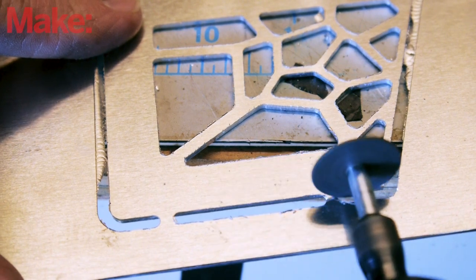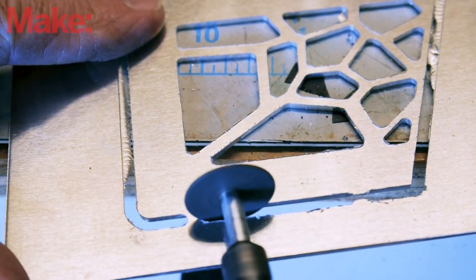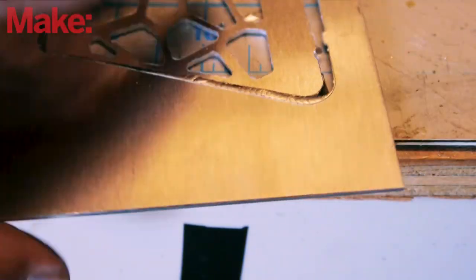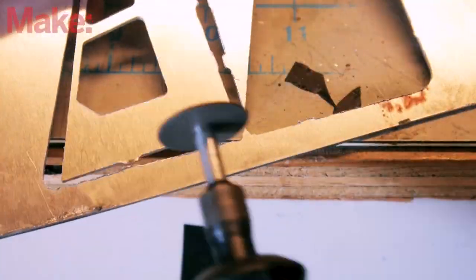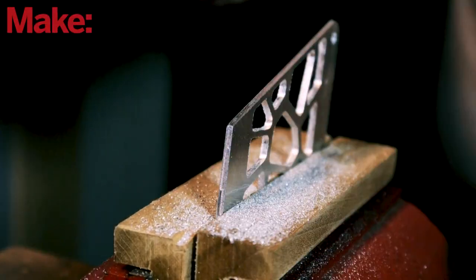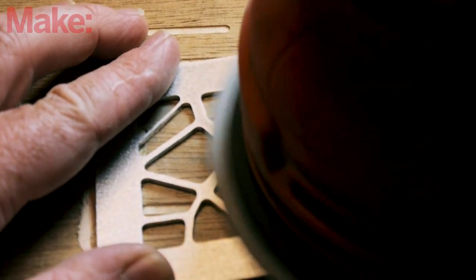With the CNC work done, I use a Dremel to cut the aluminum pieces out from their tabs. I clean up the edges with a file before finishing the surfaces with a random orbit sander.